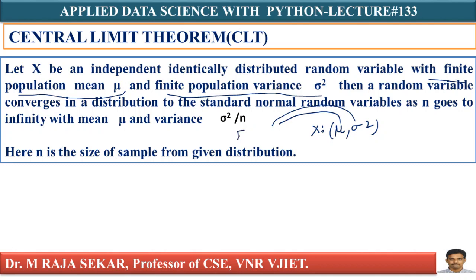I know that the mean is mu and the variance is sigma squared, and also they are finite. This population mean and population variance are finite. Once you know the finite mean mu and finite variance sigma squared, then a random variable converges in distribution to the standard normal random variable as n goes to infinity, with mean mu. This will be converted into a standard normal distribution with mean mu and variance sigma squared by n.